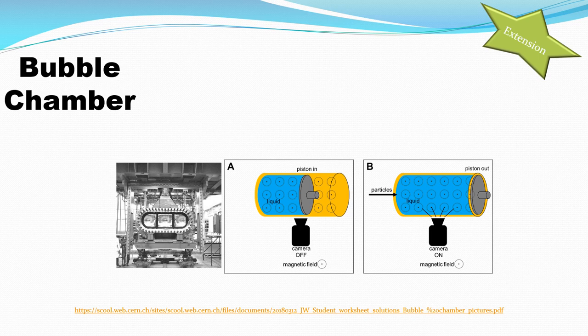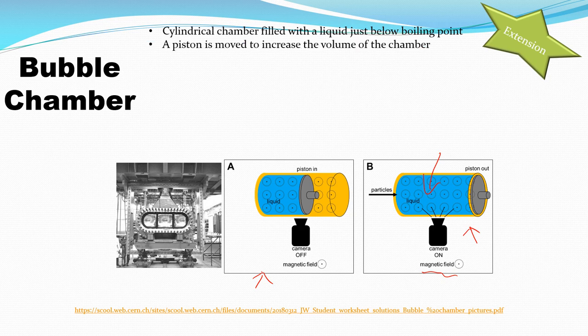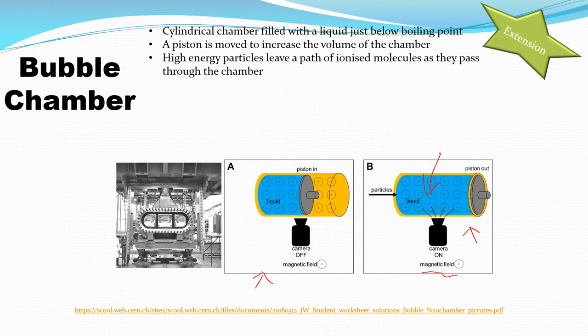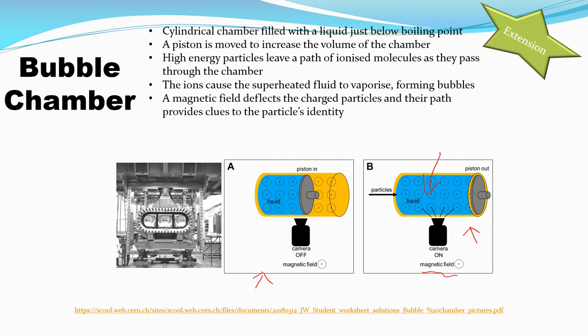We can look at things called a bubble chamber. This is another little extension. It's basically where we have this chamber like the one we see on the screen here where we sort of increase the volume. Turn the camera on and watch what happens and we have a magnetic field running and we can see particles move through this chamber because we see a trail they make. Cylindrical chamber filled with a liquid just below boiling point. Pistons move to increase the volume. High-energy particles leave a path of ionised molecules as they pass through the chamber. It causes this fluid to vaporise forming bubbles hence it's called a bubble chamber and a magnetic field deflects the charged particles.